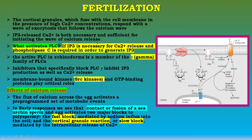A question arises: what activates PLC? If IP3 is necessary for calcium ion release and phospholipase C is required to generate IP3, then what activates PLC? In echinoderms, the active PLC is a member of the gamma family. Inhibitors that specifically block PLC-gamma inhibit IP3 production as well as calcium ion release. Membrane-bound Src kinases and GTP-binding proteins play a critical role in this reaction.